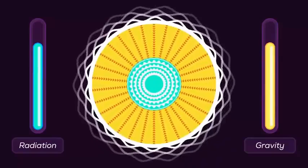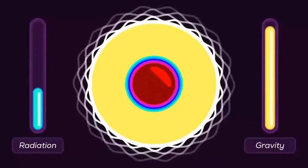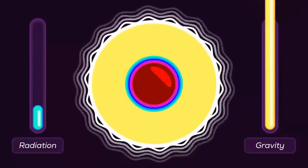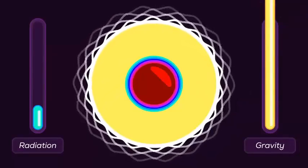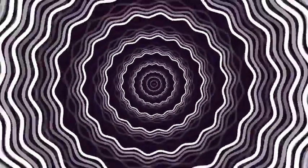But when the fuel is over, the fusion reaction stops, so gravitational pull overcomes as now there is no radiation from fusion to balance it. The core collapses within a fraction of seconds, and the star dies in a supernova explosion.